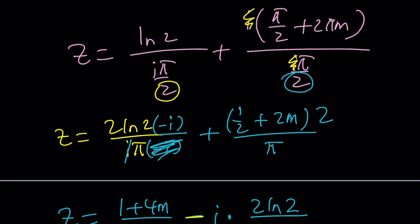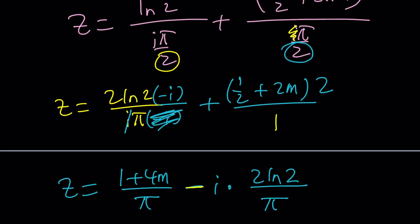When the pi canceled out, I should have a 1 here. Yes, not a pi. So then we're going to have a 1 here as well. So that when I simplify, it's going to be a lot simpler. Yes.